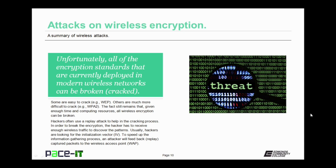In a replay attack, in order to break encryption, the hacker has to receive enough wireless traffic to discover the patterns of the encryption. Usually hackers are looking for the initialization vector, which is called the IV. To speed up the information gathering process, an attacker will feed back or replay captured packets to the wireless access point, which will cause the wireless access point to respond, giving the hacker more information so that they can review the data and possibly find the pattern.